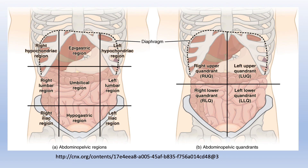The organs can be located more precisely using the nine regions. One thing I want to mention: in the right iliac region, or right inguinal region, if there is pain here it generally refers to appendicitis, because the appendix is found in the right iliac region.